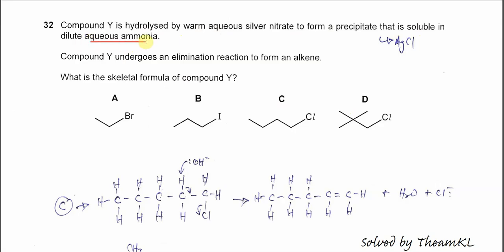From this statement, when the silver ions react with the halides from compound Y, it will produce silver chloride because only silver chloride is soluble in dilute aqueous ammonia.